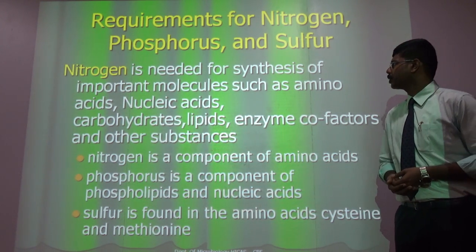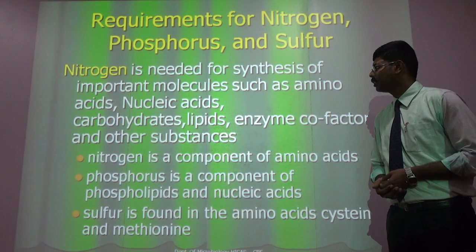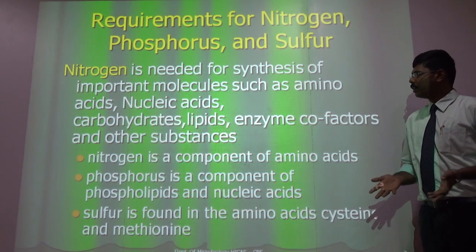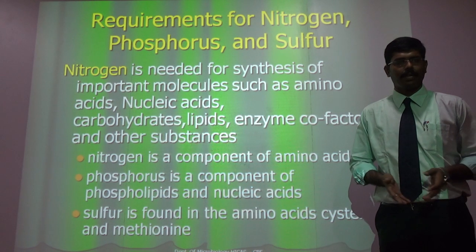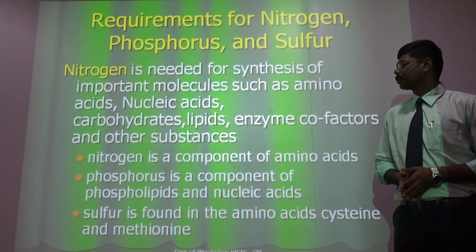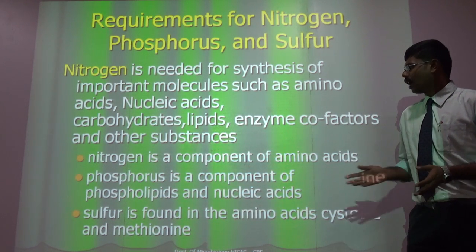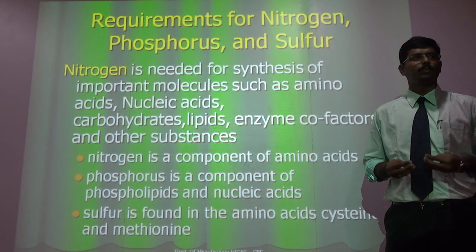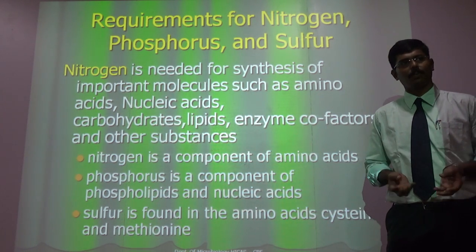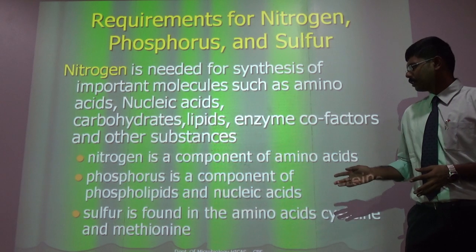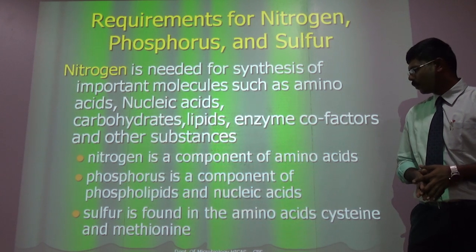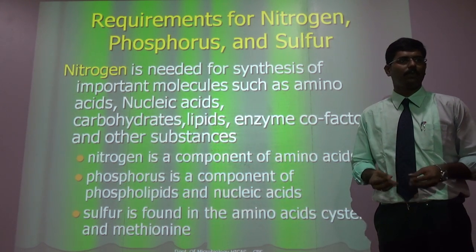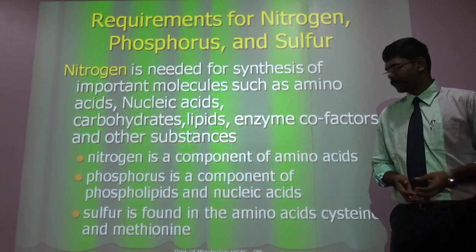Why do we need nitrogen, phosphorus, and sulfur? Nitrogen is an important component for synthesizing amino acids and nucleic acids. Phosphorus is an important component of phospholipids, which make up the cell membrane and other outer components of organisms. Sulfur is found in the amino acids methionine and cysteine, which are helpful for nucleic acid and DNA replication.